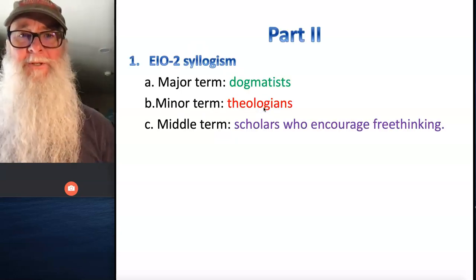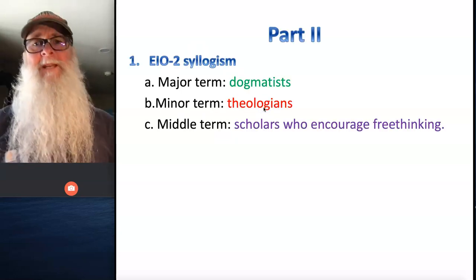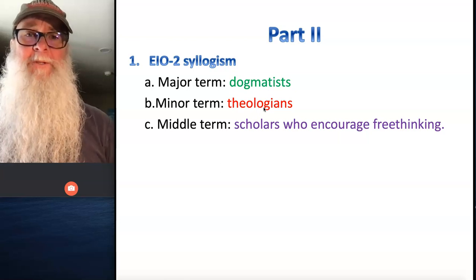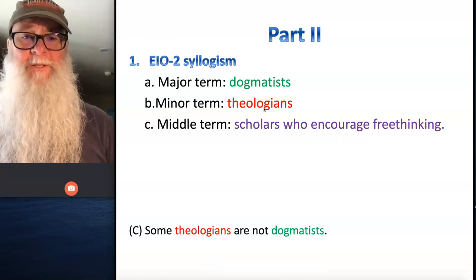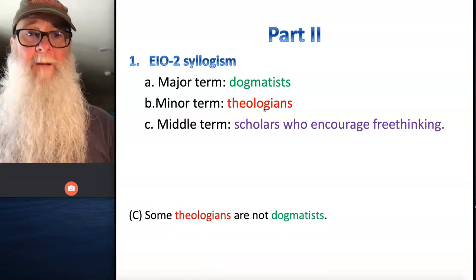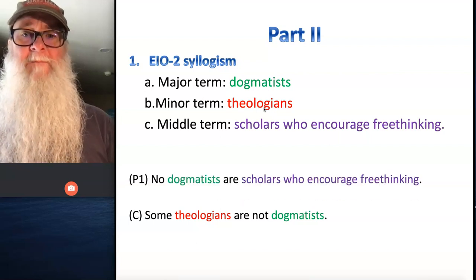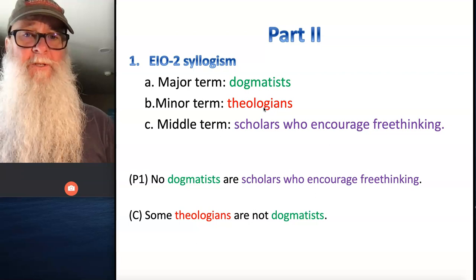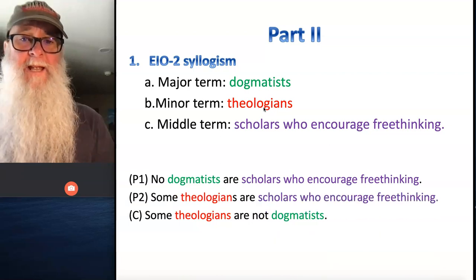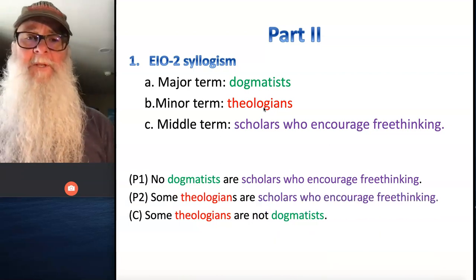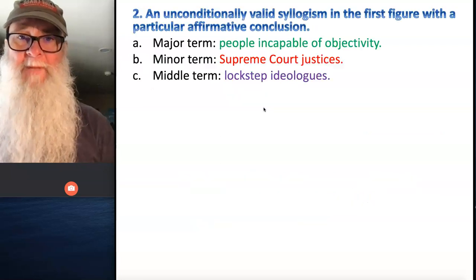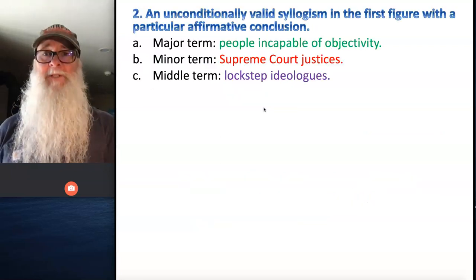Number one in part two asks you to develop a syllogism with the form EIO in figure two with these major terms. So our conclusion is some theologians are not dogmatists, our major premise is no dogmatists are scholars who encourage free thinking, and our minor premise is some theologians are scholars who encourage free thinking.